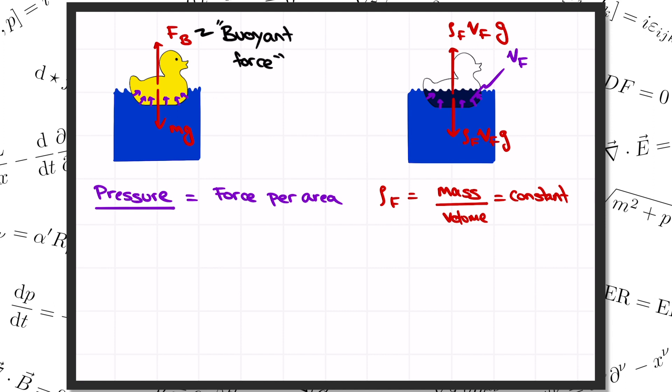That way, the total force will vanish and the fluid will be at rest. So that tells us that all the little pressure forces, represented by all the little arrows, have to add up to rho Vg, the weight of the region of fluid where the duck had been.